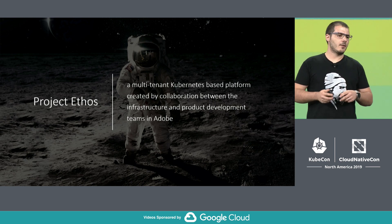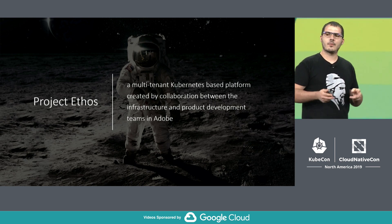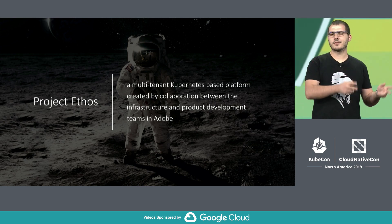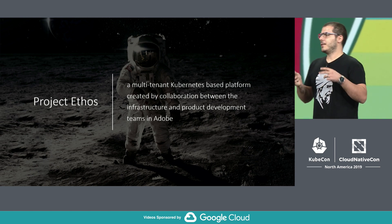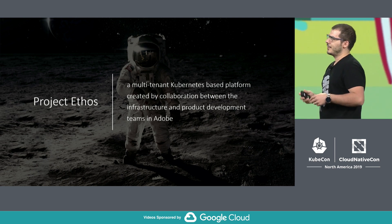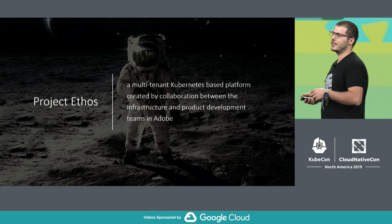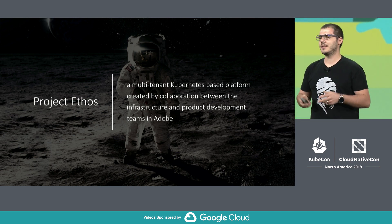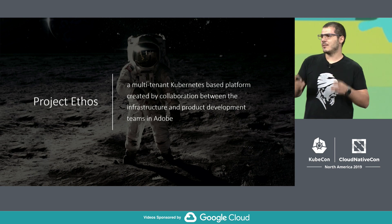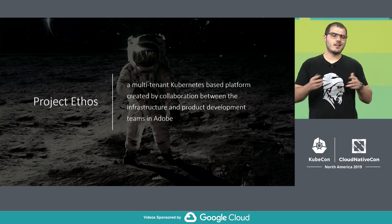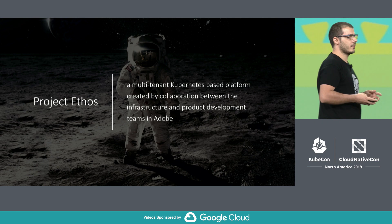Project Ethos is a multi-tenant Kubernetes-based platform put together through the collaboration between the infrastructure and product development teams at Adobe. The initial version of Ethos started in early 2016 with Apache Mesos and DCOS, and we reached an incredible scale over the past years. Then last year in December, we went into production with Kubernetes.